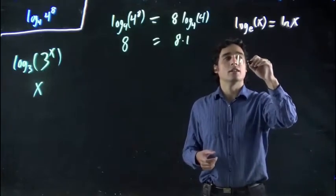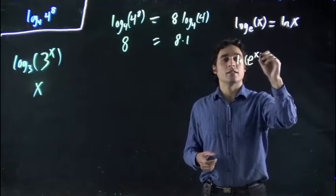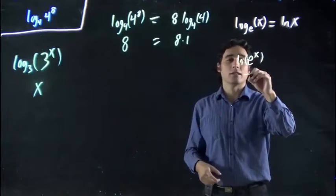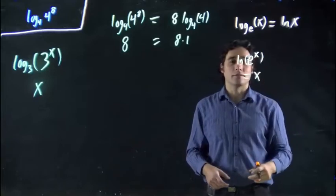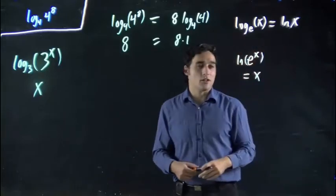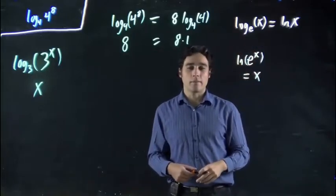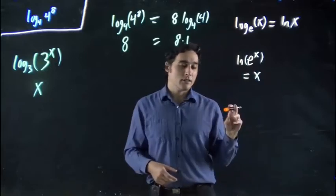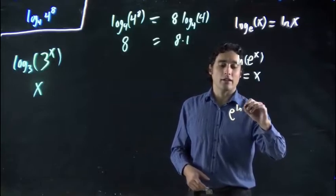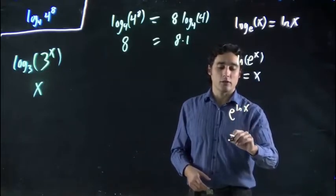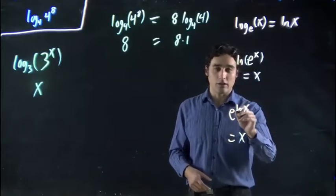If I had ln of e to the x, well just like we had here, this would be the same as x. This is log to the base e, so they cancel. And I guess it's also worth noting that if you had the opposite, if I had e to the ln x, this would just equal x too. These will still cancel.